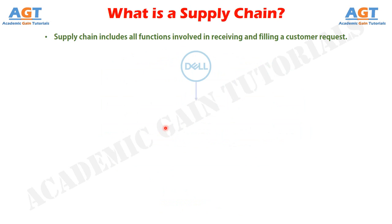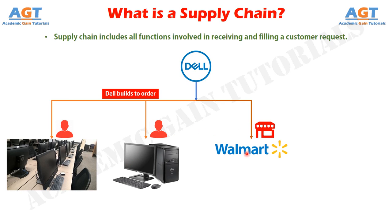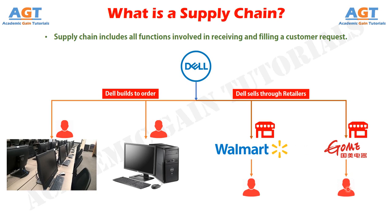For example, Dell has two supply chain structures that it uses to serve its customers. For its corporate clients and some individuals who want a customized personal computer, Dell builds to order — that is, a customer order initiates manufacturing at Dell. For these customers, Dell does not have a separate retailer, distributor, or wholesaler in the supply chain. Since 2007, Dell has also sold its personal computers through Walmart in the United States and the GOM Group, China's largest electronics retailer. Both carry Dell machines in inventory, so this supply chain contains an extra stage — the retailer — compared to the direct sales model. In the case of other retail stores, the supply chain may also contain a wholesaler or distributor between the store and the manufacturer.